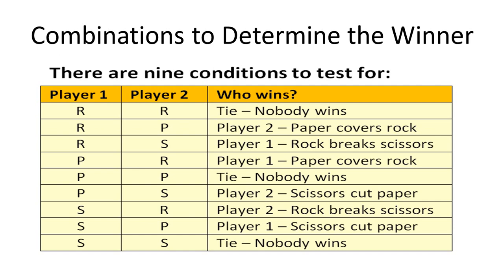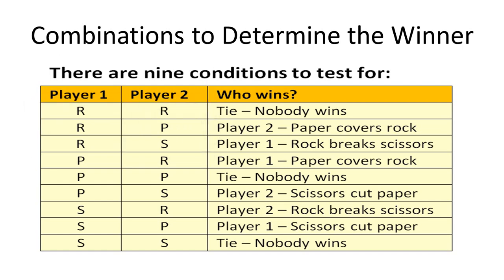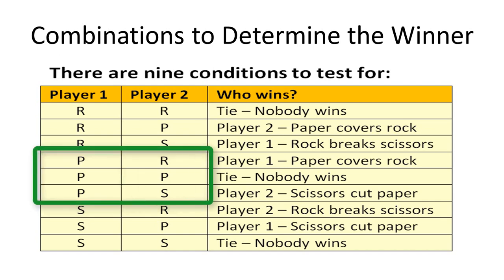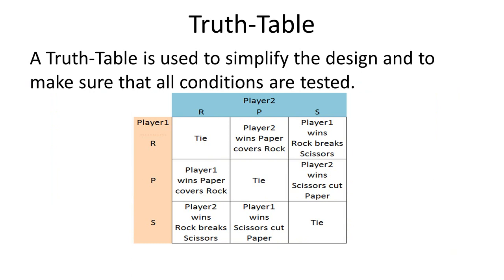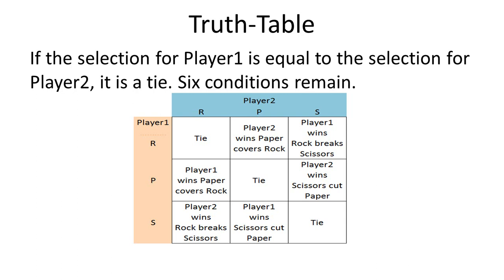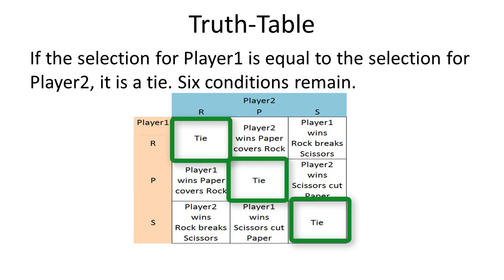There are nine conditions to test for. If player 1 selects R for rock, player 2 could have rock, paper, or scissors. If player 1 selects paper, player 2 could also have rock, paper, or scissors. If player 1 selects scissors, player 2 could also select rock, paper, or scissors. We can use a truth table to help simplify the design and make sure all conditions are tested. If the selection for player 1 equals the selection for player 2, it is a tie — so test for that first, then test for the six other remaining conditions.